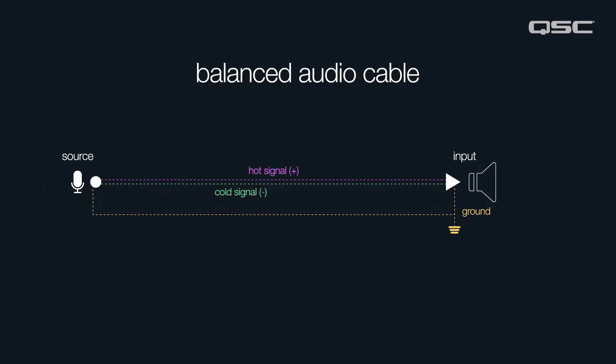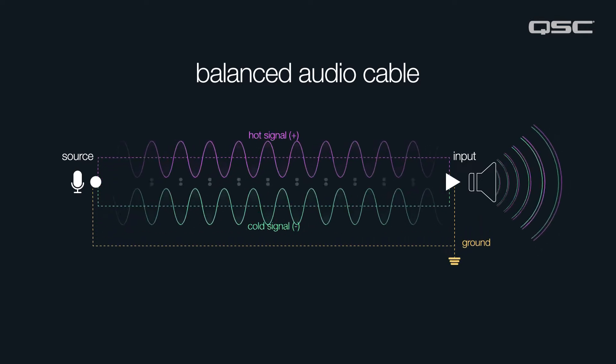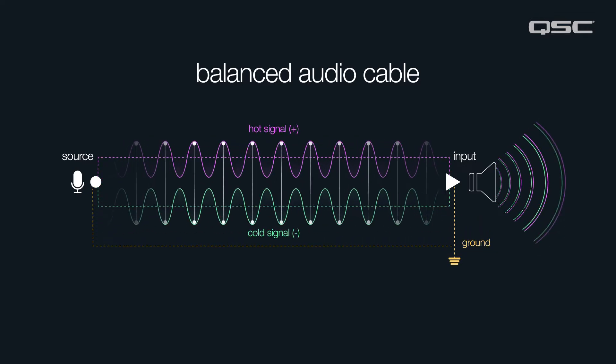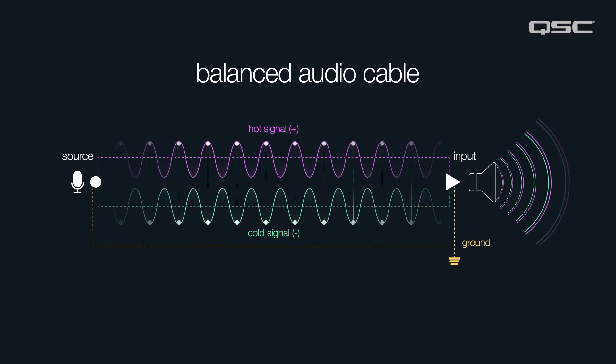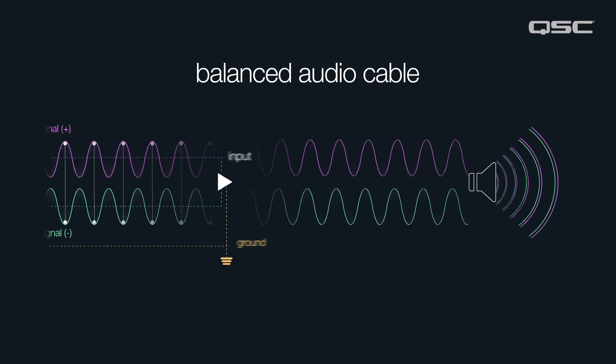The third wire carries a negative signal. The negative signal is the same as the positive signal, except that it is reversed in polarity. As the two signals travel along the cable, they actually cancel each other out.